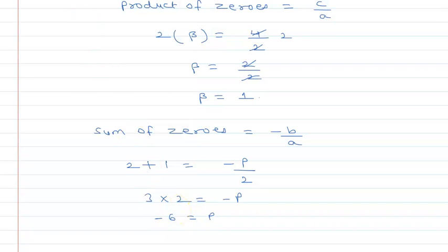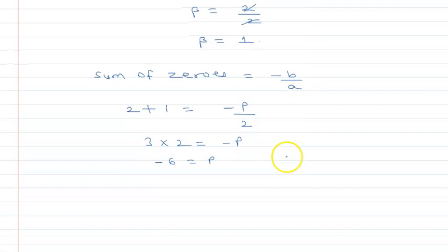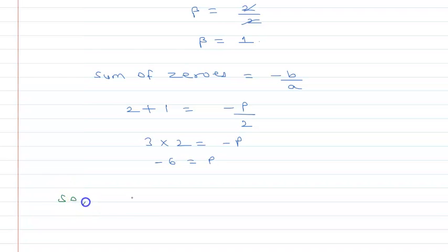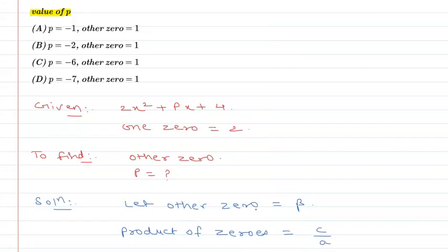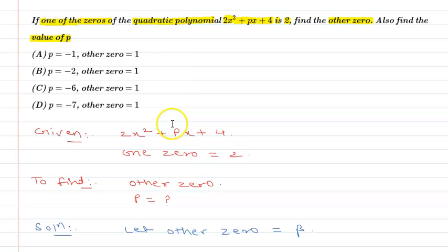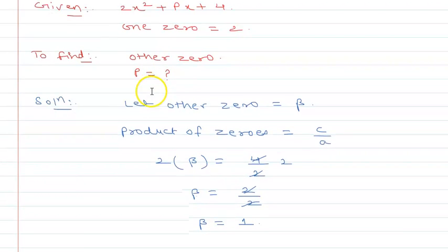So we have the other zero is equal to 1 and the value of p is -6. If I check the options, the other zero is equal to 1, so I can say that option C is correct.